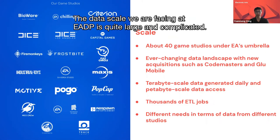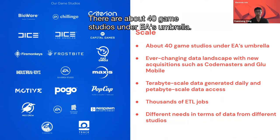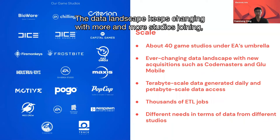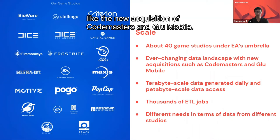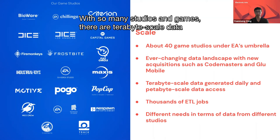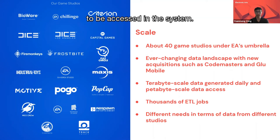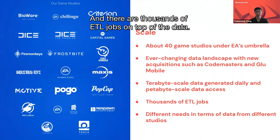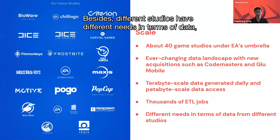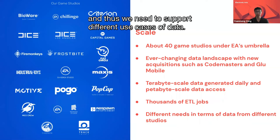The data scale we are facing at EADP is pretty large and complicated. There are above 40 game studios under the EA umbrella, and the data landscape keeps changing with more studios joining, like the new acquisitions of Codemasters and Glu Mobile. With so many studios and games, there is terabyte-scale data generated daily and cumulatively petabyte-scale data in the system. There are thousands of ETL jobs on top of the data, and different studios have different needs in terms of data, requiring us to support diverse use cases.